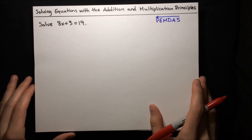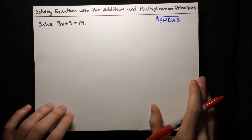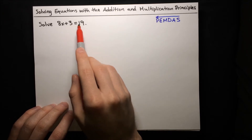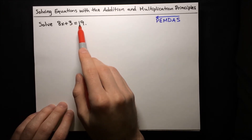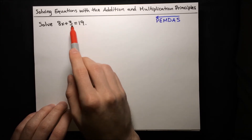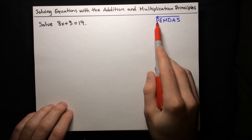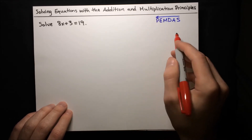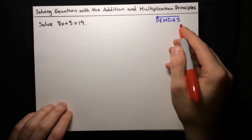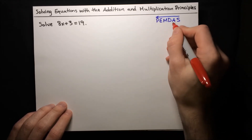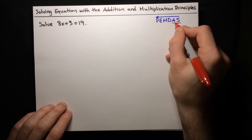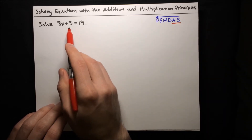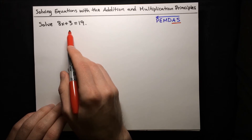Here is an example. We want to solve the equation 8x plus 3 equals 19. We're going to keep in mind that to solve this, we just need to follow the steps of PEMDAS in reverse. So to start off, we'll begin with addition and subtraction, using it to simplify this equation a bit.